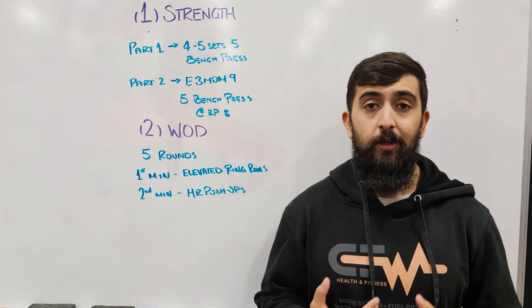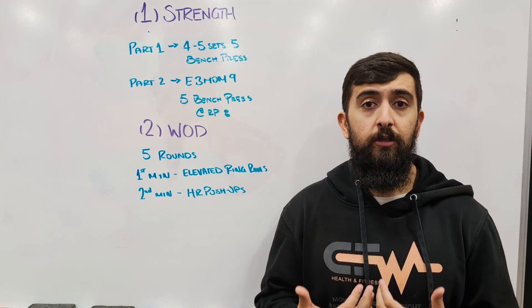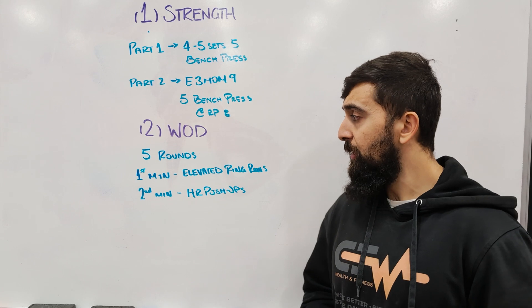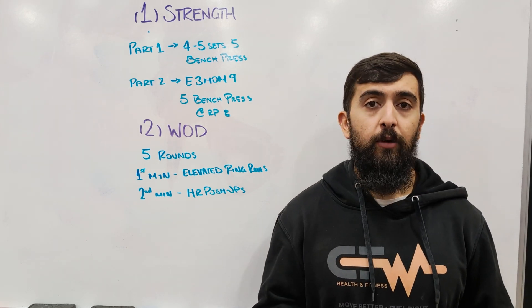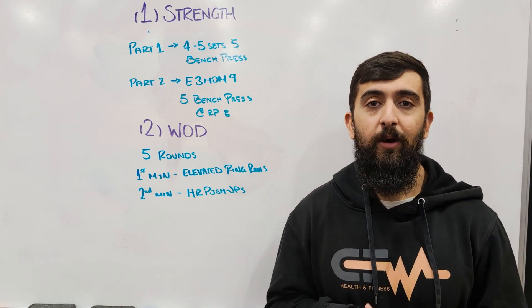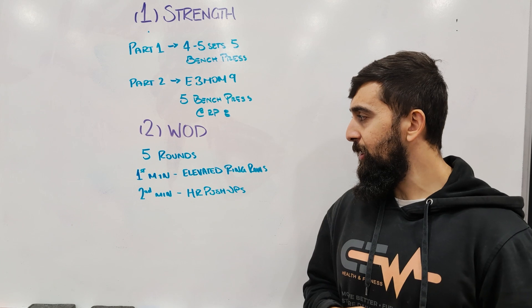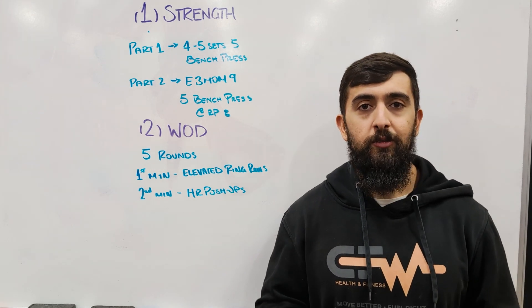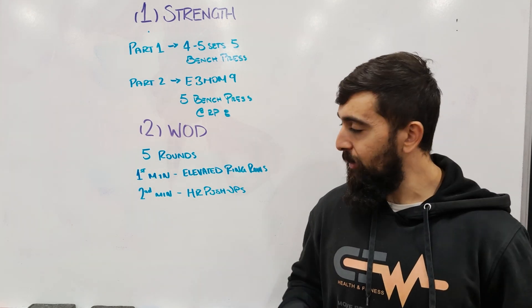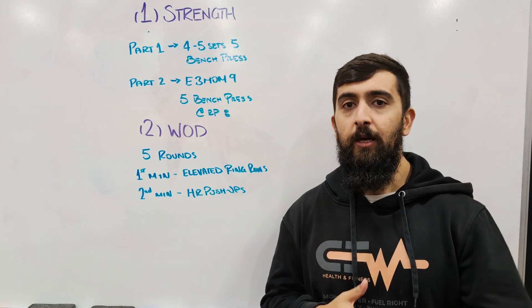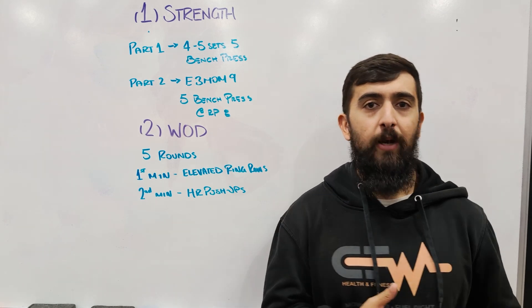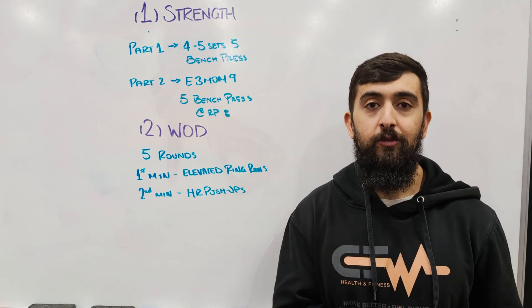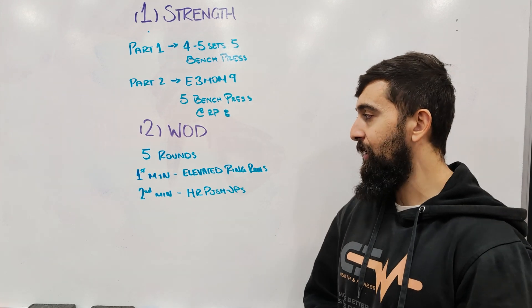After that, our workout is going to be more about that muscle endurance building here. We've got five rounds. First minute is about elevated ring rows. Second minute is about hand release push-ups. This workout simply is a nice push-pull. So we're going to go horizontal, do our ring rows, and then we're going to flip over, do our push-ups. That opposite muscle group action is going to really help us build strength and endurance today. So we're going to take advantage of that.